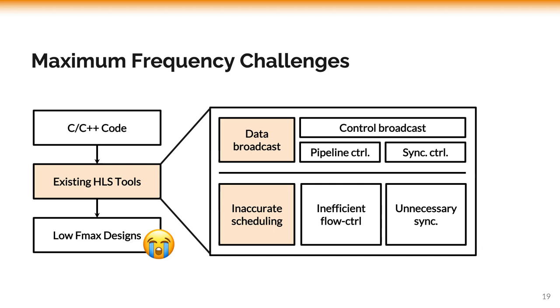To briefly sum up, data broadcasts are often implicitly specified in user codes, and they will disrupt the current delay estimation model of the compiler, especially the scheduling, thus leading to bad timing quality because some combinational paths may be too long and there is inadequate registering to break these long combinational paths. Meanwhile, control broadcasts are automatically inferred by the compiler, thus it is even harder to deal with for users. Two common scenarios are the pipeline flow control broadcast and the synchronization broadcast.